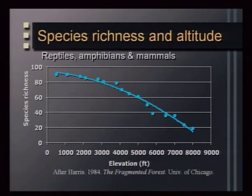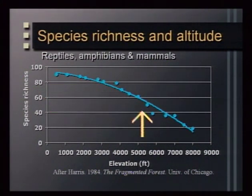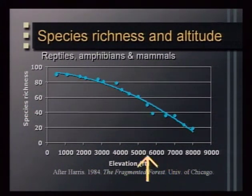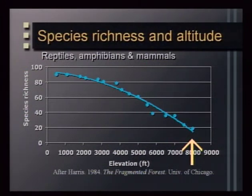Altitude is another geographic factor explaining species distribution. Species richness generally decreases as we move from low to higher elevations. For reptiles, amphibians, and mammals in the Cascades of Western Oregon, species richness peaks around 1,000 feet in elevation and declines substantially toward 8,000 to 9,000 feet at the top. This is important for land management because much private land is held at these lower, more species-rich elevations, while the middle and upper portions of the gradient are typically federal lands, wilderness areas, and national parks.